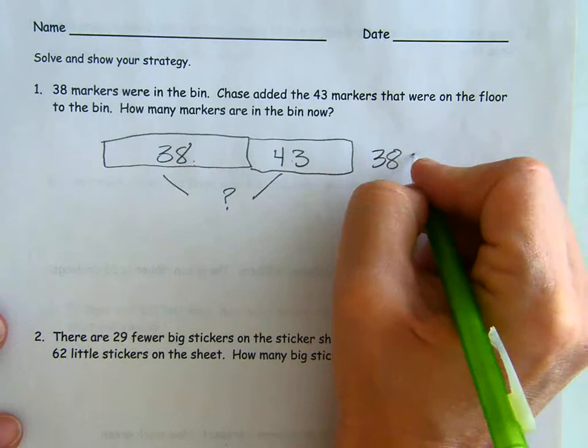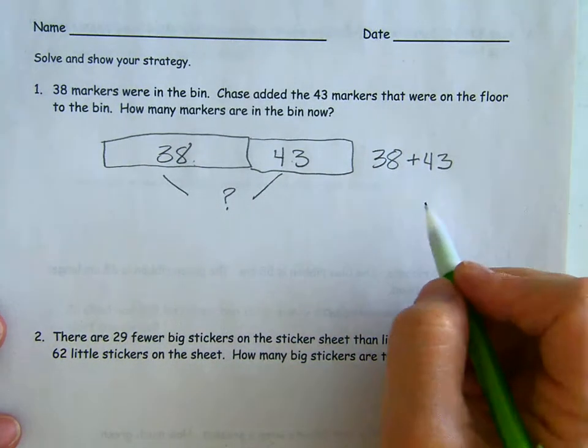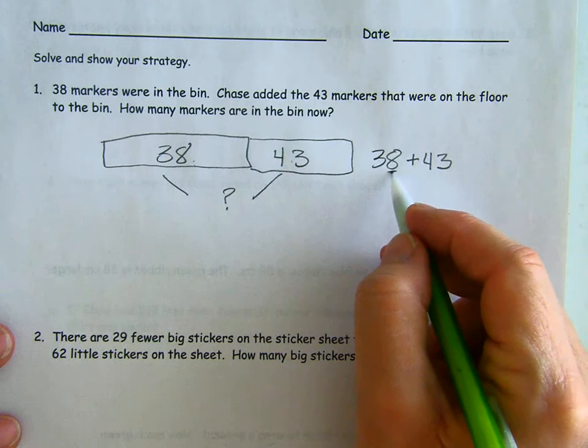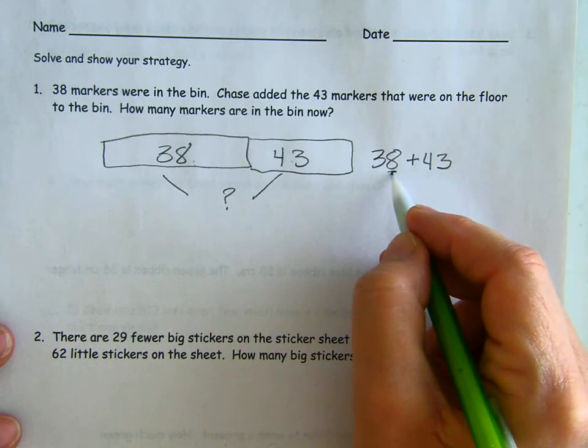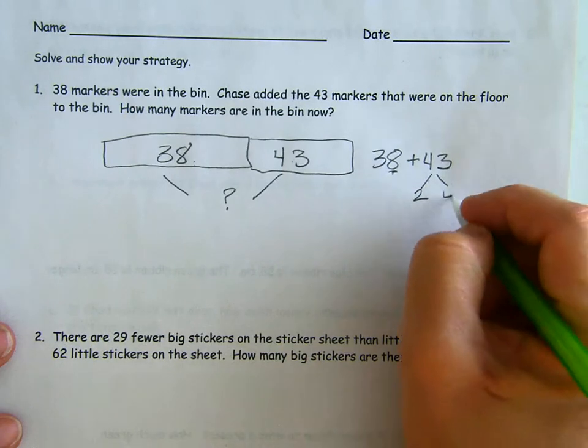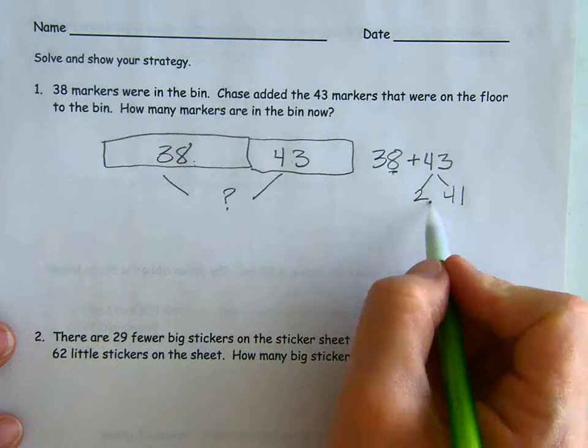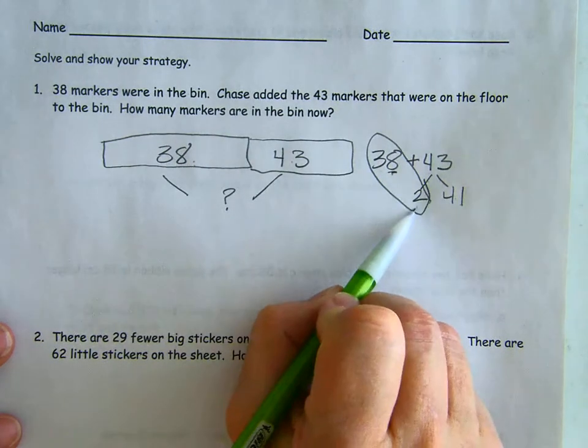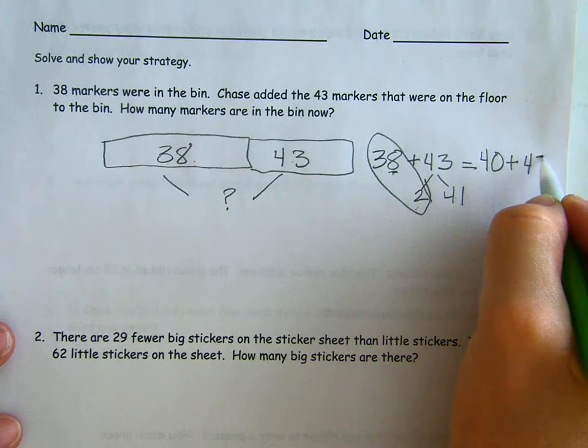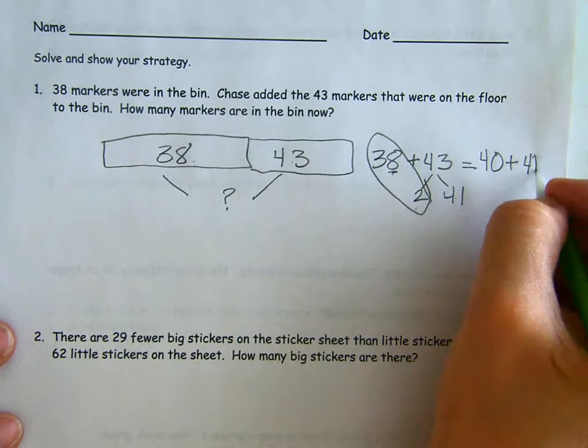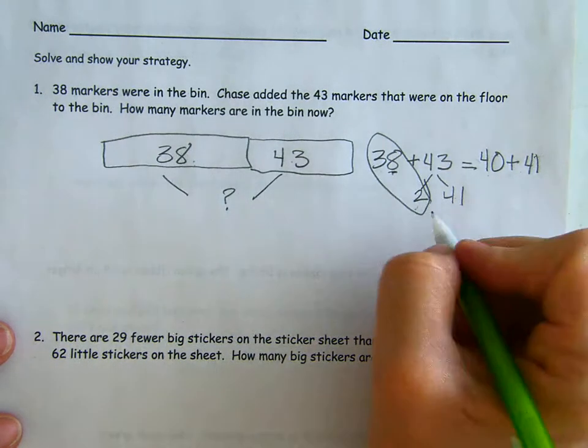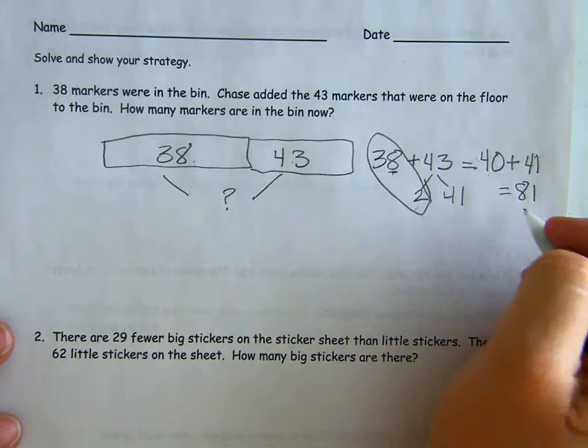So we have 38 plus 43. We want to make a 10. It's always easier to add with a multiple of 10. We have 38, that's very close. How many do we need to get to the next 10? We need to take 2 out of here. So 3 ones take away 2 ones is going to leave you with 1, and then the 4 tens. So 38 plus 43 is the same as 40 plus 41. We have 4 tens plus 4 tens and 1. That equals 8 tens 1, or 81.